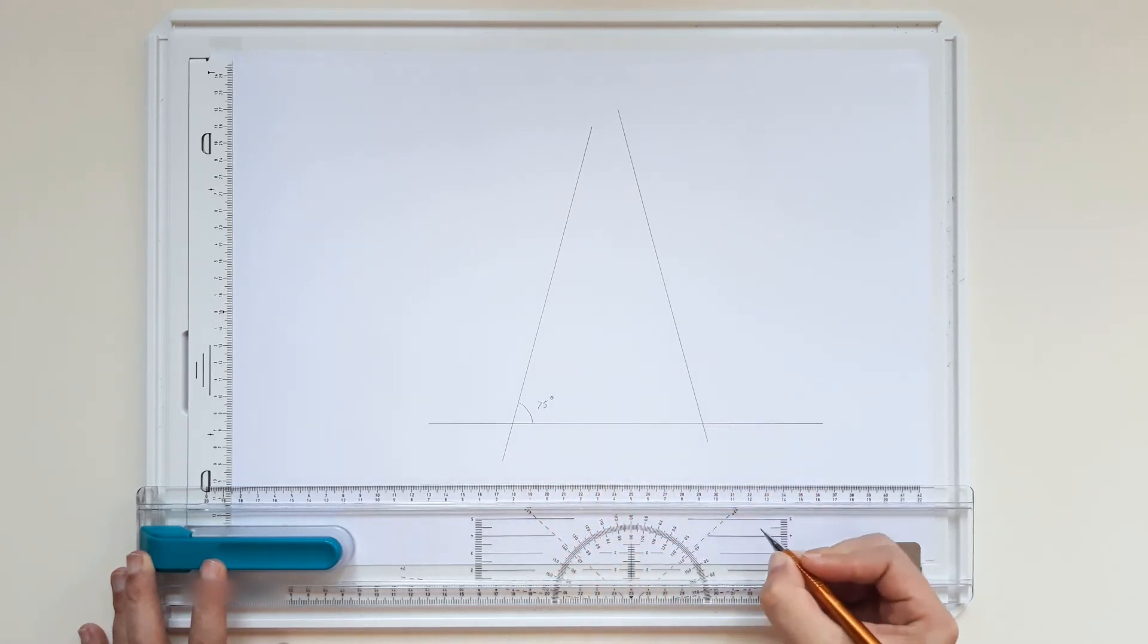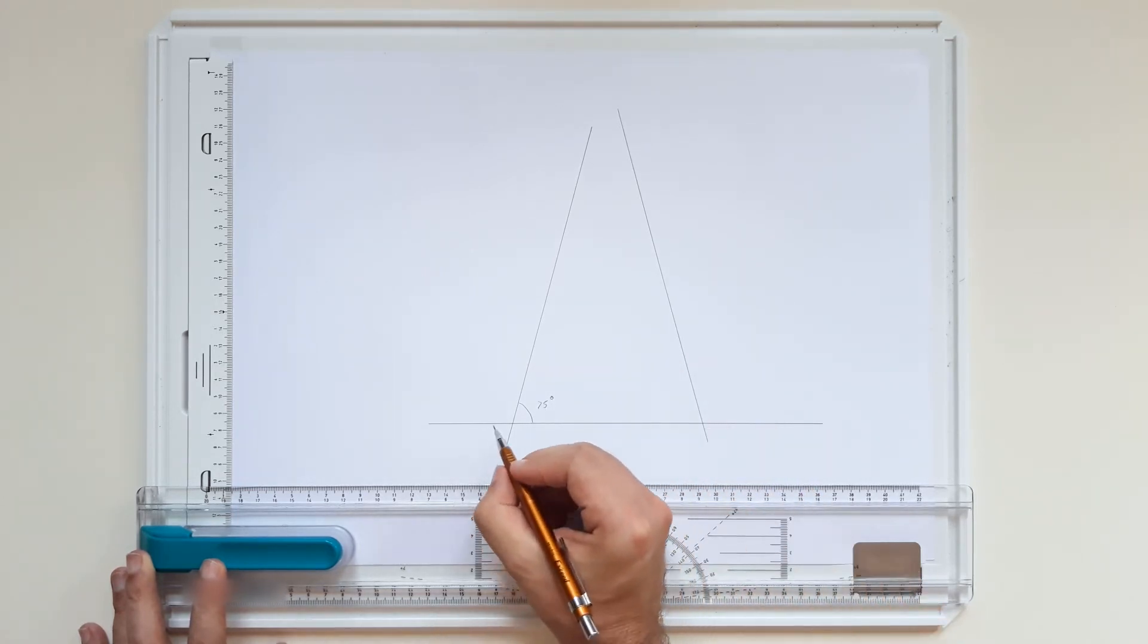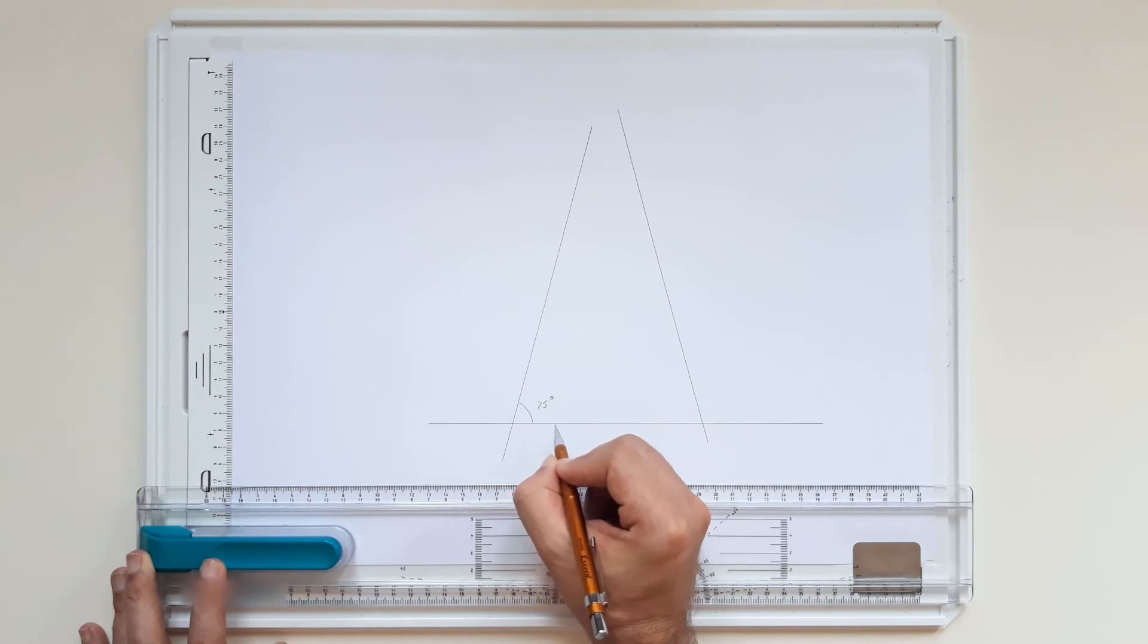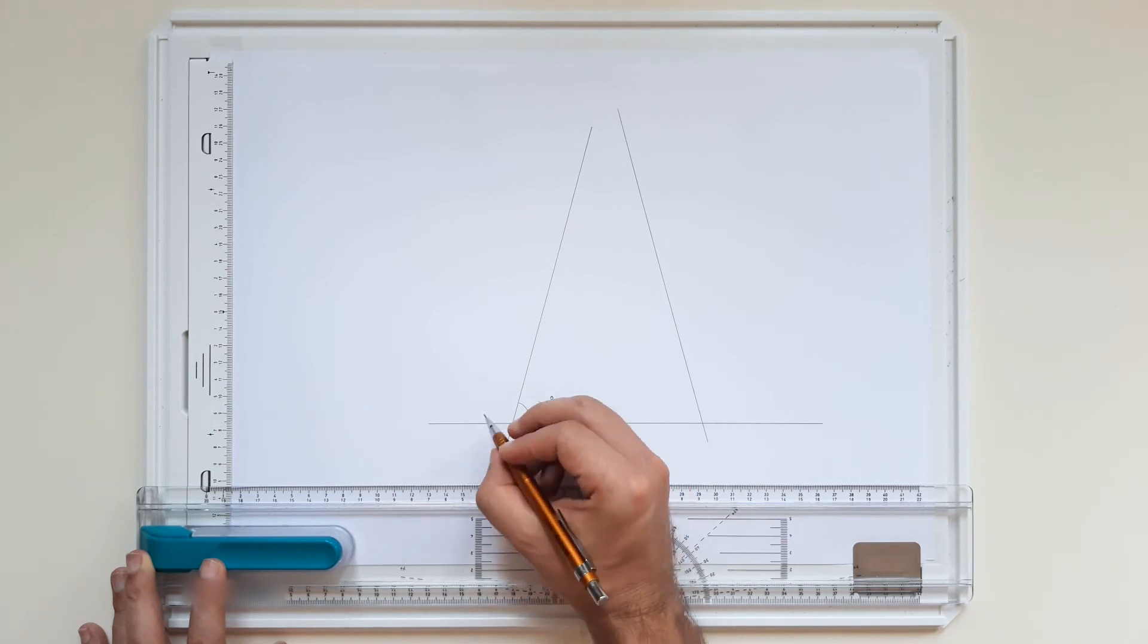then we know that a horizontal line, or any line, has an angle of 180 degrees. So if we subtract 75 degrees, we get the 105 degree angle on the other side.